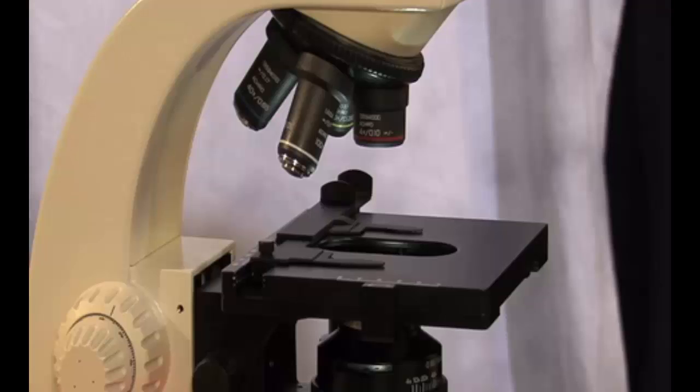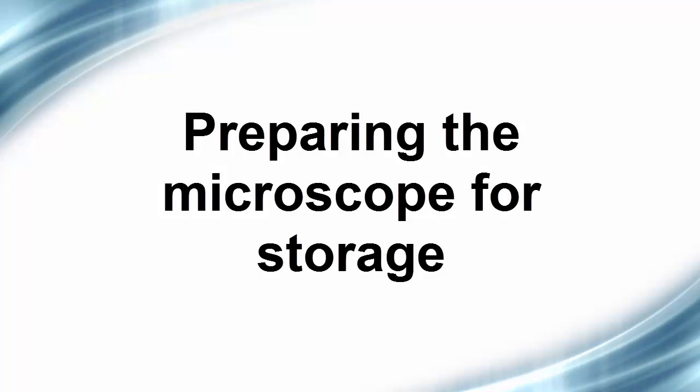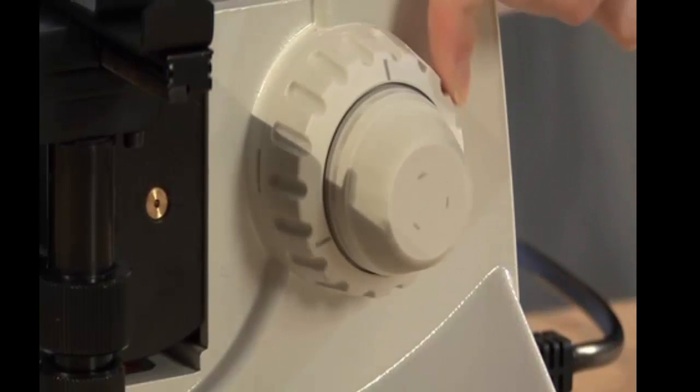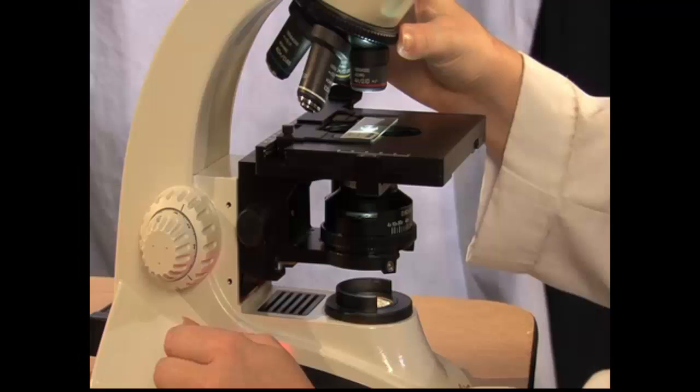You are now ready to select another specimen and start viewing it. When you are finished using the light microscope, you will need to prepare it for storage. Use the coarse adjustment knob to lower the stage to its lowest position and then rotate the objectives back to scanning power.